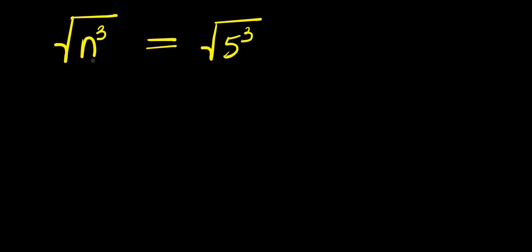Hello, how to solve this radical problem: square root of n to the power 3 equals square root of 5 to the power 3. We are solving for all values of n that satisfy this equation.